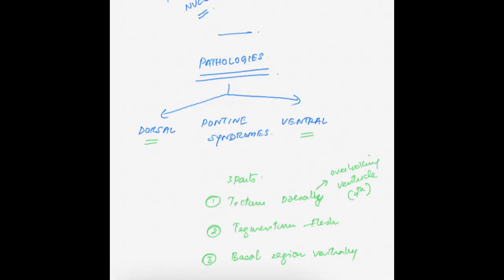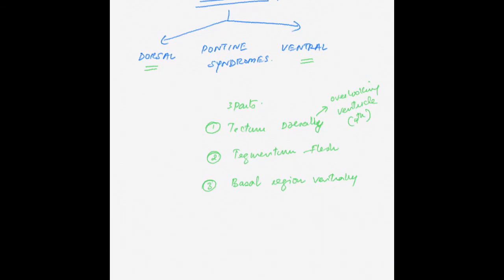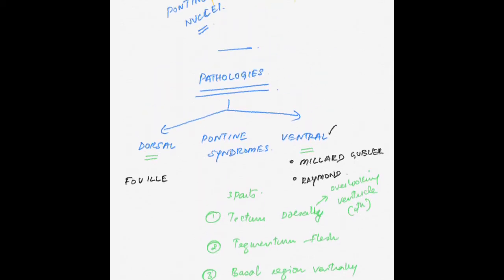For dorsal pontine syndromes, we have the Foville syndrome and the Raymond-Cestan syndrome. For ventral pontine syndromes, we have the Millard-Gubler syndrome and the Raymond syndrome. Note that the Raymond syndrome is different from the Raymond-Cestan syndrome — keep that in mind. We will go back to the diagram and discuss the ventral pontine syndromes first.